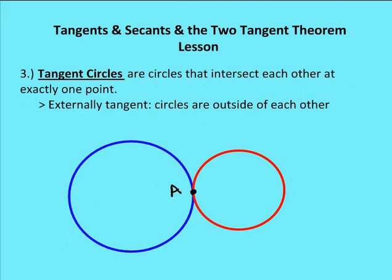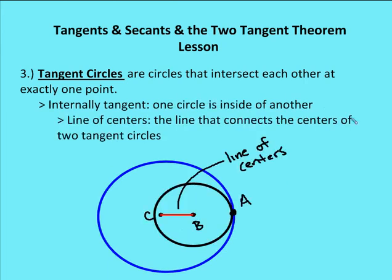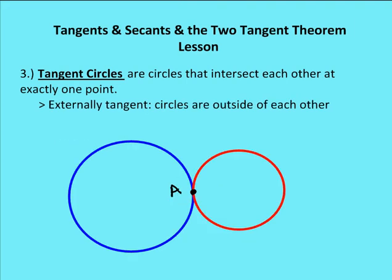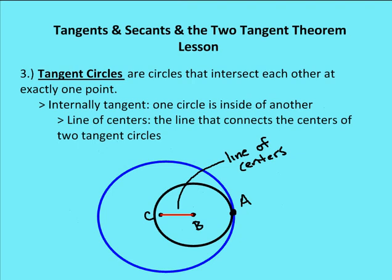There are two types of tangent circles. The first is an externally tangent circle, where two circles meet at one point and both circles are outside of each other. The second type is internally tangent circles — for example, circle B is inside of circle C, so they're internally tangent. So one type has circles meeting at one point while remaining outside each other, and the other has one circle inside another.